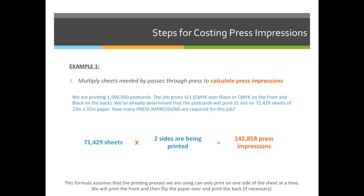Let's take a look at our original example. We're printing 1,500,000 postcards, and the job prints 4 over 1 — that's CMYK on the front and black on the back. We've already determined the postcards will print 21 out on 71,429 sheets. To calculate press impressions, we take 71,429 sheets and multiply by 2, because we print on both the front and back of the sheet. It doesn't matter how many colors are on the front or back — it's always 1 or 2, not times 4 or 5. So 71,429 multiplied by 2 equals 142,858 press impressions.